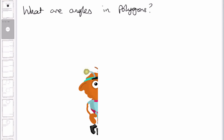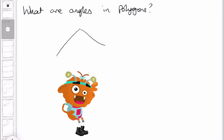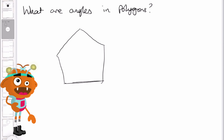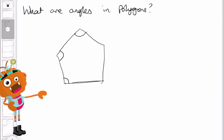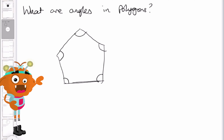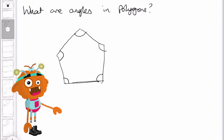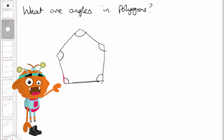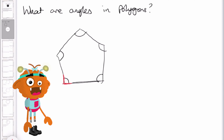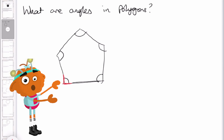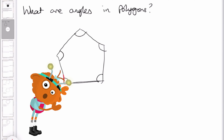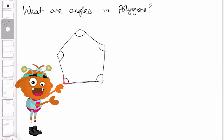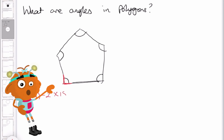Angles in polygons relate to the interior and exterior angles of a regular or irregular polygon. So let's draw out a simple shape — that's our pentagon here. Interior angles are those that are inside of the shape. A pentagon has five interior angles, and each interior angle is made with two sides. We can calculate the sum of interior angles by subtracting 2 from the number of sides: (n − 2) × 180 degrees.